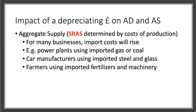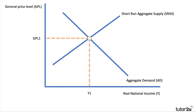Aggregate supply is also affected by an exchange rate — many students don't build this into their analysis, but they should. For many businesses across the economy, import costs will go up. If you're a power plant, your gas or coal will cost more. If you're a car maker, perhaps you're importing steel and glass — that will cost more. If you're a farmer buying fertilizer from the States, that will cost more. So there will be an increase in costs affecting aggregate supply in the short run.